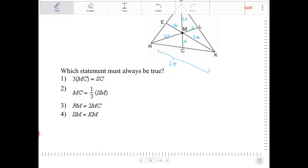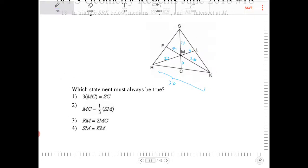So option number one, it says 3MC is equal to SC. Let's see here. 3 of MC will equal to SC. That satisfies it, because the full length of the median SC is going to be 3 times that of MC, which is what we're calling X.